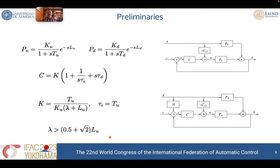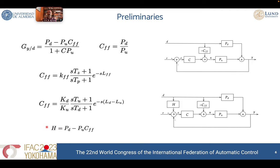As preliminaries, let's consider that we are using first-order plus time-delay dynamics for our process. This means that you can have higher-order dynamics in your process, but you should be able to approximate those dynamics by first-order transfer functions plus time delay. As feedback controller we will use a PI controller, and as tuning method we will use the classical lambda method, suggesting this value for the lambda parameter in order to obtain non-oscillatory behavior in closed loop.